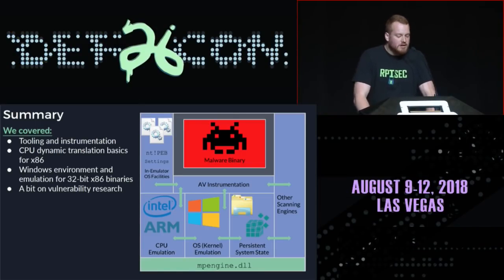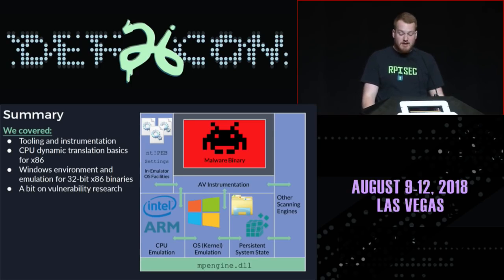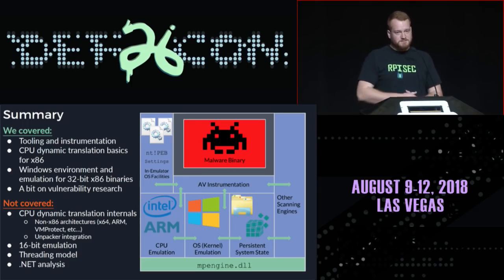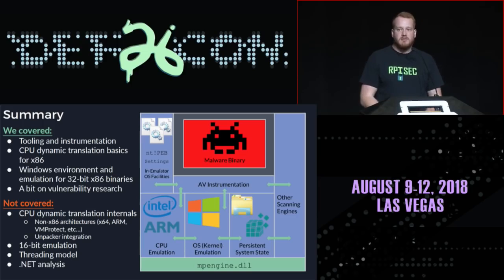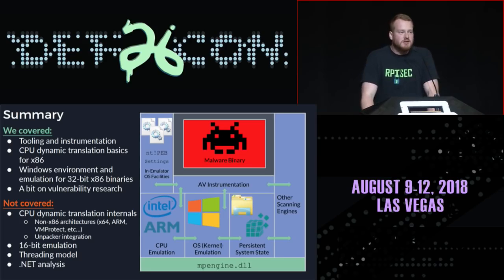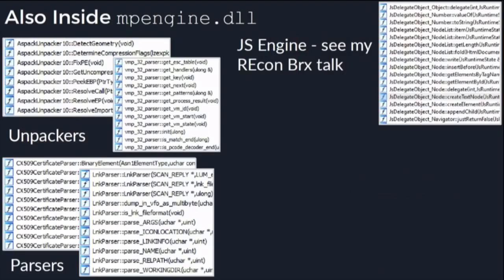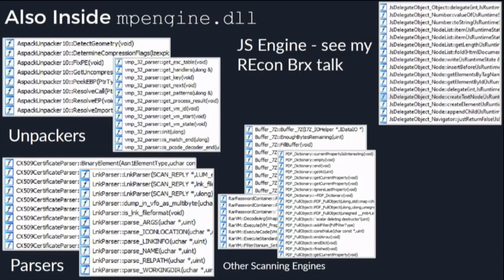In conclusion, we covered tooling and instrumentation, CPU emulation basics for x86 binaries, and vulnerability research and fuzzing for Windows Defender. We didn't cover x64 emulation, ARM emulation, VMProtect emulation, 16-bit emulation — there is actually a full DOS emulator in addition to the Win32 emulator, interesting attack surface. We also didn't cover the threading model, .NET binary analysis, unpackers, parsers, a JavaScript engine, and other scanning engines inside mpengine.